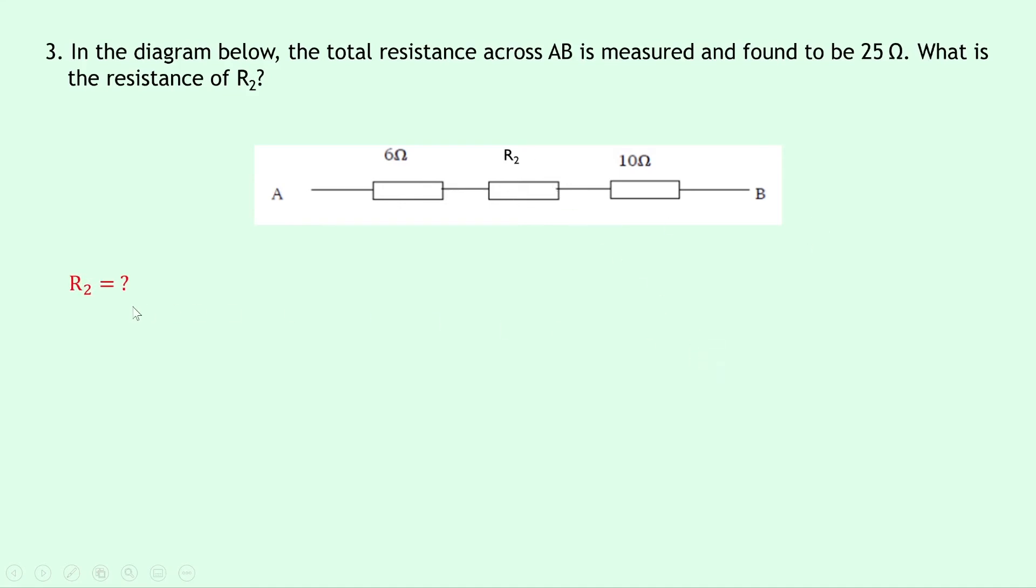We know that RT is 25 ohms from the question, R1 is 6 ohms and R3 is 10 ohms. So I'm just calling these R1, R2, and R3 from left to right. And writing down my equation now, I have RT equals R1 plus R2 plus R3, stopping at R3 because we've only got three components.